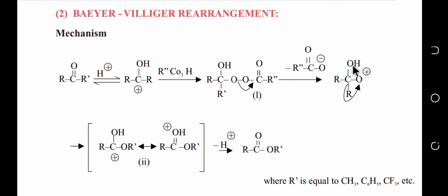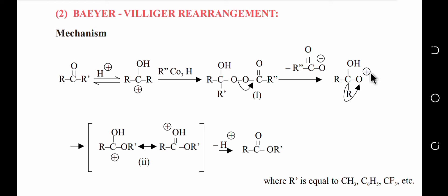The negatively charged oxygen side is the side product. On the main product side, we now have an oxygen with a positive charge attached to what was the original ketone — for example, acetone. An alkyl shift will now occur: one alkyl group shifts toward the positively charged oxygen. This structure is unstable because an electronegative element — oxygen — carries a positive charge.